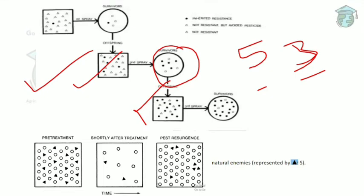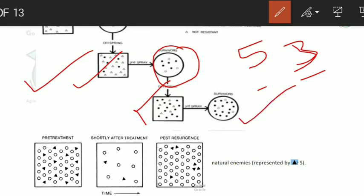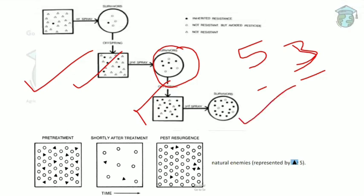The moral of the story: in the first box there is only one inherited-resistant insect, but in the last box there are many. With each spray, the pest population gains more resistance, passed from parent to offspring and then to their offspring. This progressive increase in resistance through inheritance is called pest resistance.